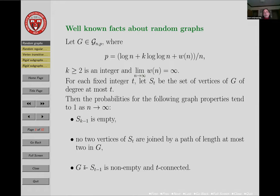Also, if you take out the vertices of low degree—where t could be as large as you want—then the rest is t-connected. So if you take out the ones with degree smaller than your given t, then the rest is actually t-connected. In some sense, that's quite astounding.